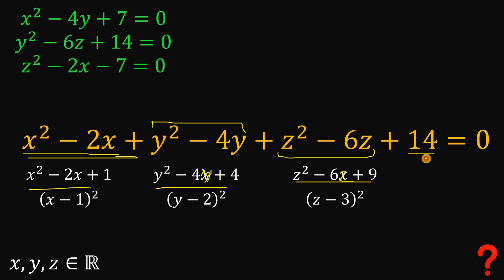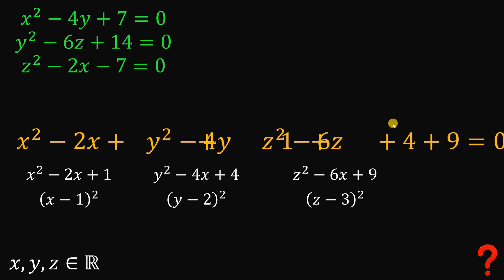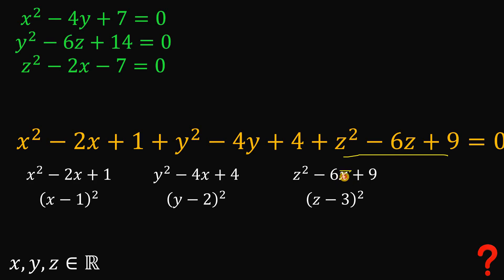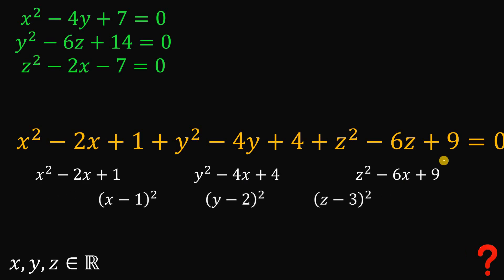Notice that we have a constant of 14, and 14 can be written as 1 plus 4 plus 9. So we can replace 14 with 1 plus 4 plus 9, adding the 1 to the x squared minus 2x terms, the 4 to the y squared minus 4y terms, and the 9 to the z squared minus 6z terms. This means the entire equation can be rewritten as (x minus 1) squared plus (y minus 2) squared plus (z minus 3) squared equals 0.